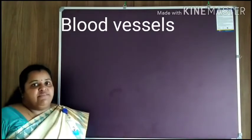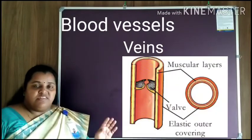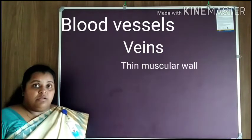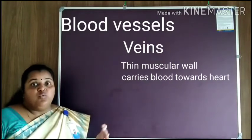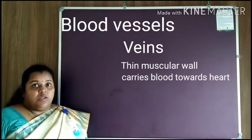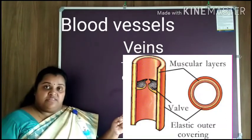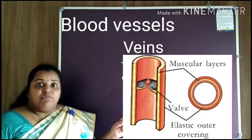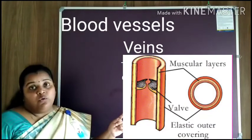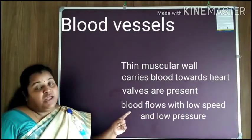The second type of blood vessel is known as veins. Veins are made up of thin, muscular walls. They carry the blood towards the heart. Valves are present inside which prevent the backward flow of blood. The blood flows with low speed and low pressure.